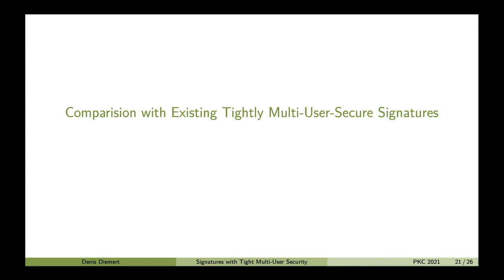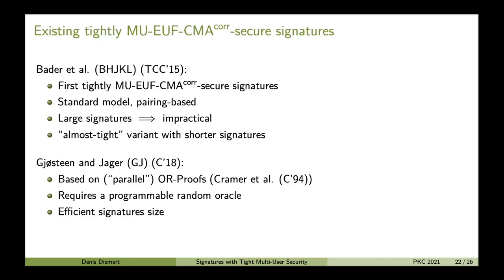Next I would like to compare our scheme with existing tightly multi-user secure signatures. To our knowledge, only two constructions achieve multi-user security with adaptive corruptions: Bada et al. TCC 2015 and Gjøsteen-Jager Crypto 2018. The Bada et al. construction was the first, introduced in the context of the first tightly secure authenticated key exchange protocol. It is in the standard model and pairing-based, but signatures are rather large — making the scheme rather impractical. There is an almost-tight variant with shorter signatures, but as informed by one of the authors, there is a flaw in the proof. The Gjøsteen-Jager construction is also based on OR proofs — parallel OR proofs by Cramer et al. Crypto 1994 — requires a programmable random oracle, but is very efficient with respect to signature size and public keys.